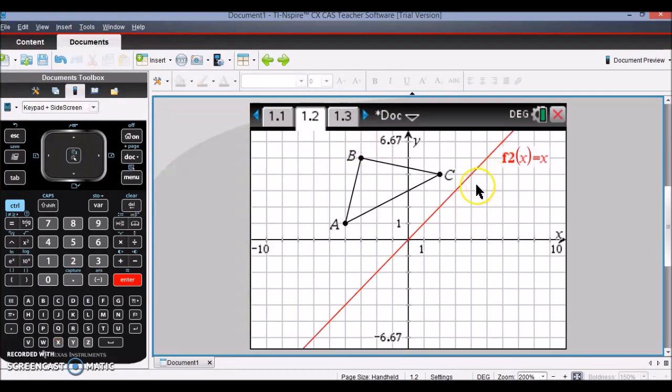That line will appear on my graph, but I still need to construct a line segment over that line in order to use my reflection tool. So now that I know where the line y equals x is on my graph, I'm going to go to Menu,